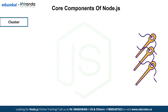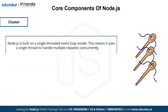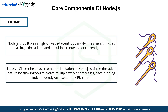The next component is cluster. Node.js operates on a single-threaded event loop which handles multiple requests concurrently in one thread. However, this can limit performance on multi-core systems. The cluster module addresses this by enabling the creation of multiple worker processes, each running independently on separate CPU cores. This allows Node.js to fully utilize system resources, enhancing scalability and performance for high-demand applications.